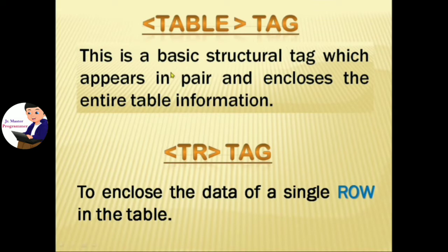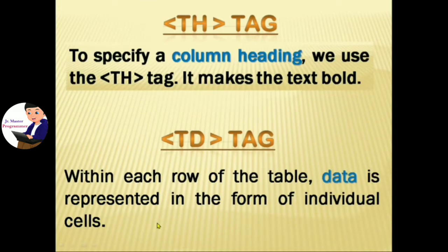tr means table row, and it is used to enclose the data of a single row in the table. th means table heading, used to specify a column heading — it makes the text bold. td means table data tag, used within each row of the table.